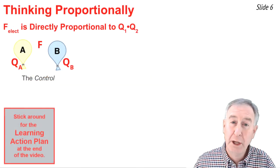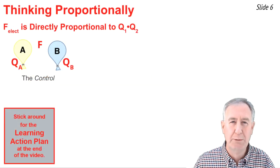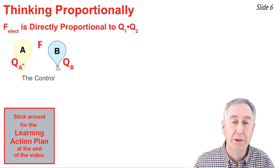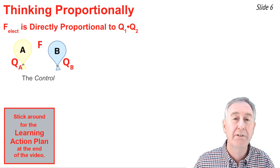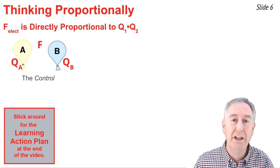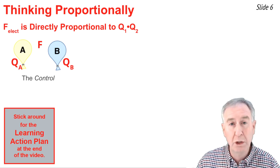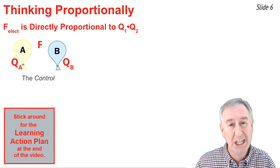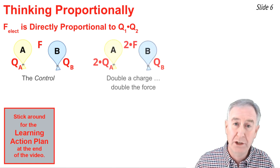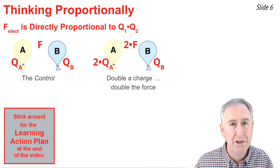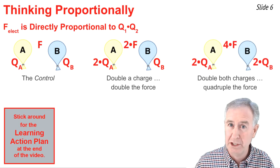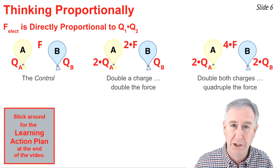In a physics course, there are typically two ways we use Coulomb's law. One way is to think about how a change in one of the variables would affect the electric force. For instance, the change in one of the Q values. Here we have two balloons with charges QA and QB. If we double one of the charges, that would double the force. If we double both the charges, that would quadruple the force.